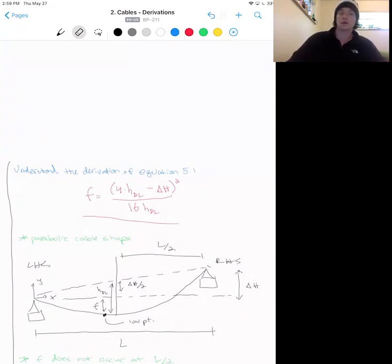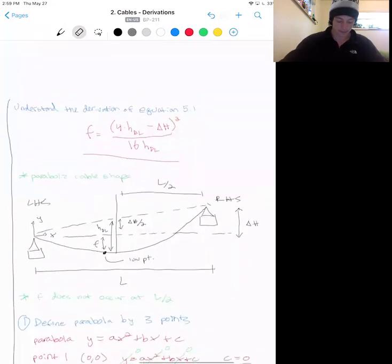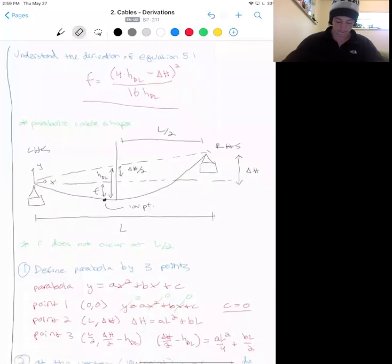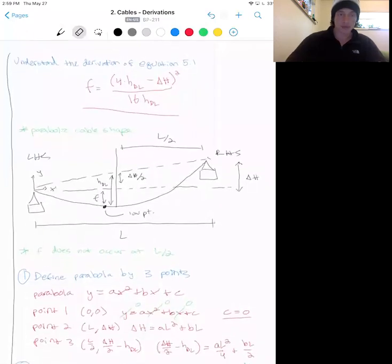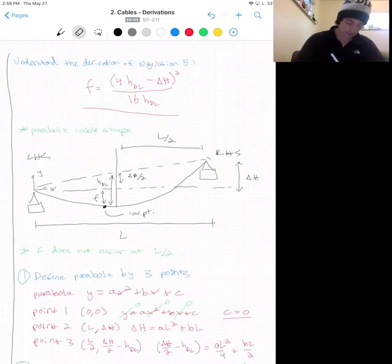First, we'll take the equation of a parabola and define three points. Point 1 will be 0, 0 on the left-hand side.